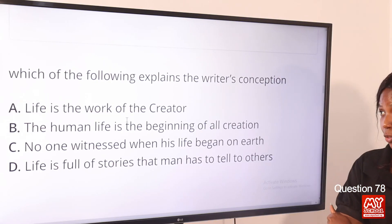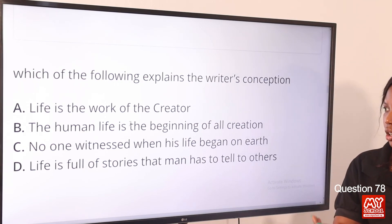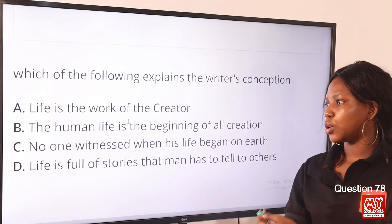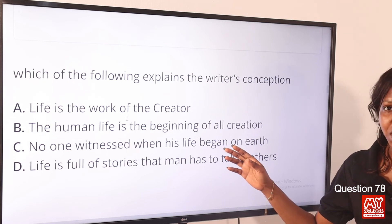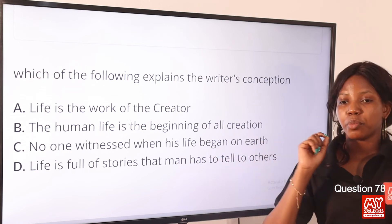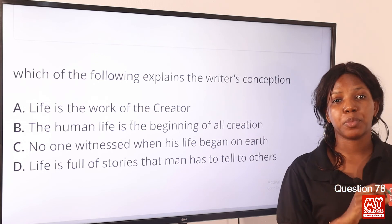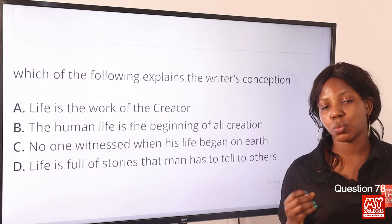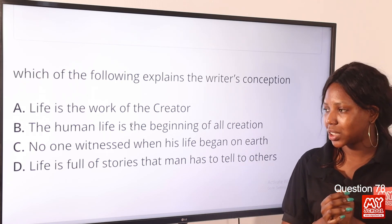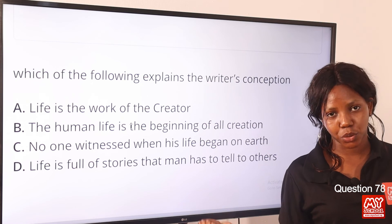Question 78. Option A: life is the work of the creator. Option B: the woman's life is the beginning of all creation. Option C: no one witnessed when his life began on earth. Option D is not the writer's conception. Precisely in the passage, it was said that no one can say precisely what happened when he or she was born. So option C is the correct answer.